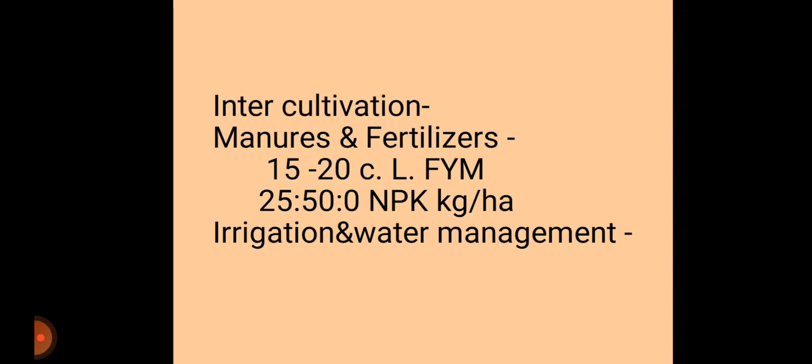Another herbicide that can be used is basalin, at 1 kg active ingredient per hectare in 800 to 1000 liters of water, applied as a pre-planting spray for weed control.